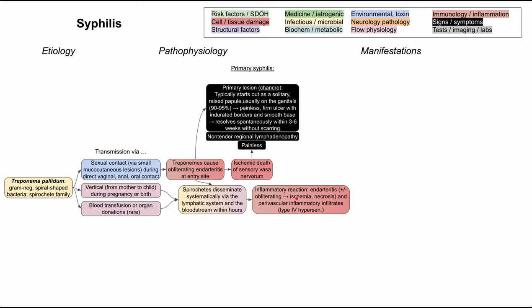The spirochetes cause an inflammatory reaction. They cause endarteritis — an obliterating endarteritis that causes ischemia and necrosis — and they also cause perivascular inflammatory infiltrates. This is essentially a type 4 hypersensitivity reaction. This causes secondary syphilis, which presents throughout the body. It's a more systemic reaction, and syphilis is known as the great imitator, so the manifestations can appear in many different organ systems.